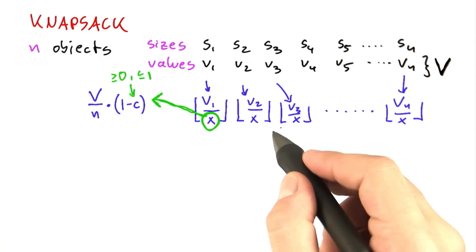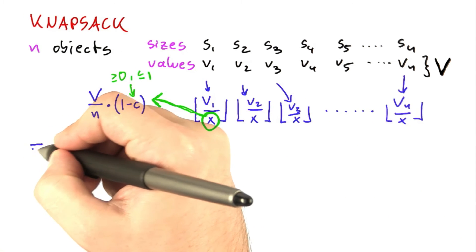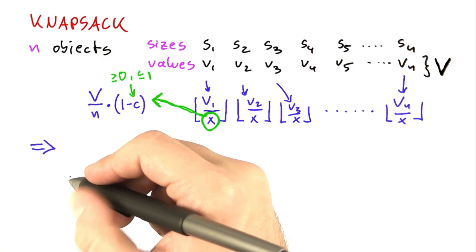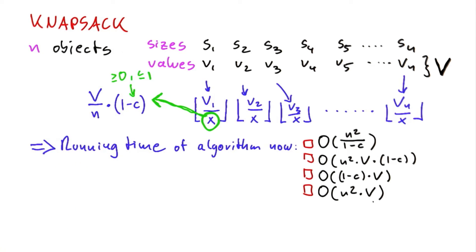Now, using these values here, if you use the knapsack algorithm using the table, my question to you is what is the running time now of the knapsack algorithm using these values here.